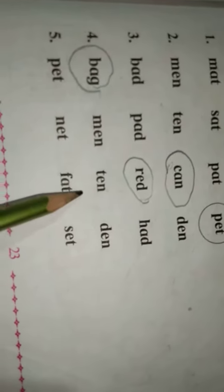Now fifth observe. Pet, net, fat and safe. Here which word different? Fat. Here circle. And other words are 'e' pronunciation. Pet, net, safe. So fat is different word.